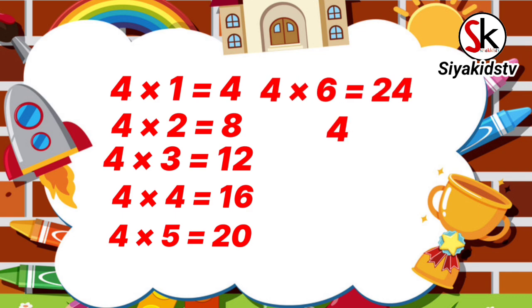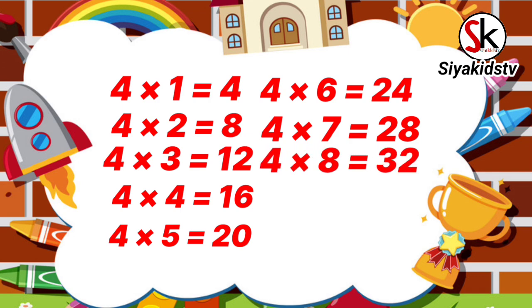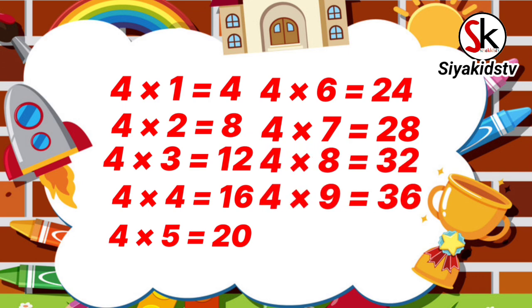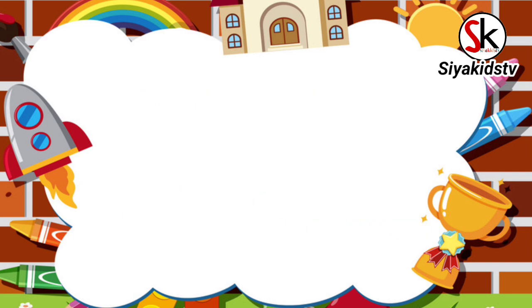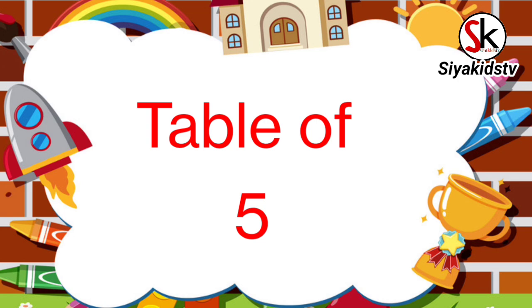4 times 7 is 28, 4 times 8 is 32, 4 times 9 is 36, 4 times 10 is 40. Table of 5.